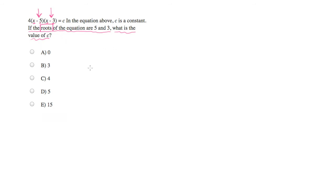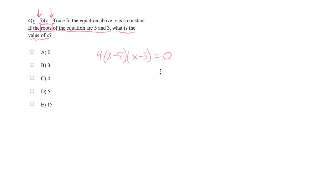Now, a root of an equation is simply the condition where plugging a number in for x yields a value of 0. So when they say it's a root, what they mean is this equation — 4 times x minus 5, times x minus 3 — equals 0.